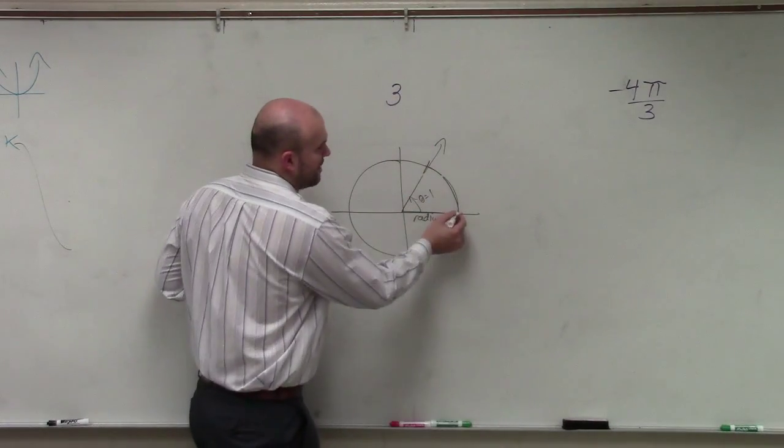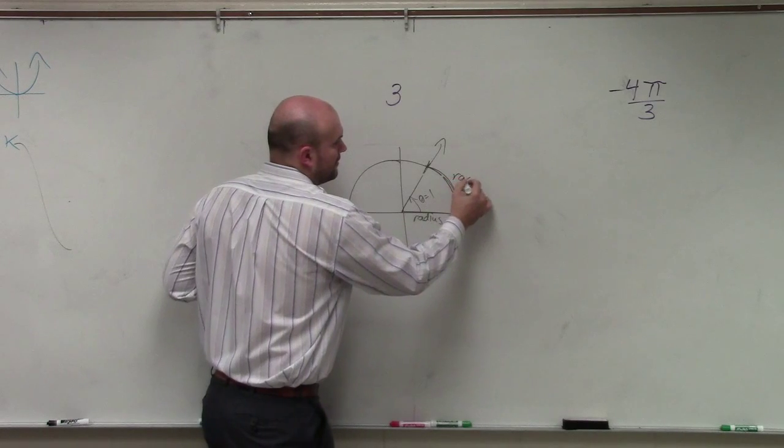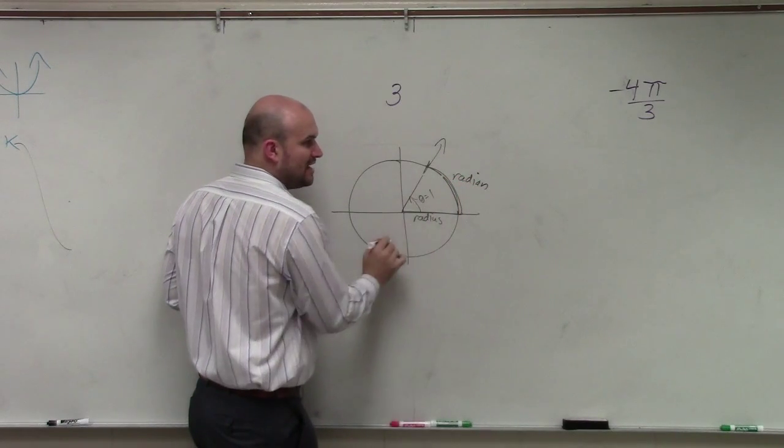You take the radius and wrap it around the circle, right? That angle is one radian.